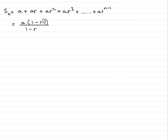In an earlier tutorial, I showed you that this sum was equal to A times all of 1 minus R to the power n, all over 1 minus R.